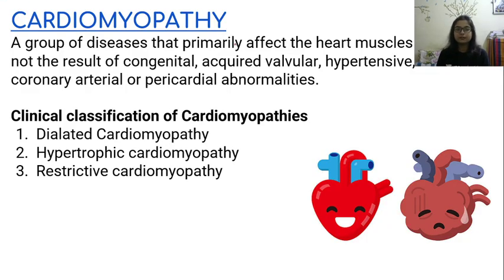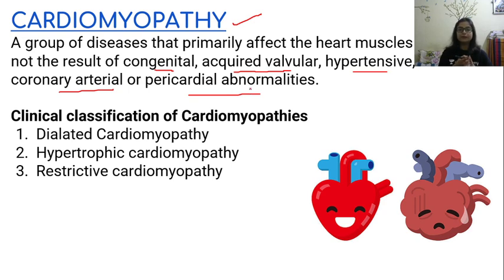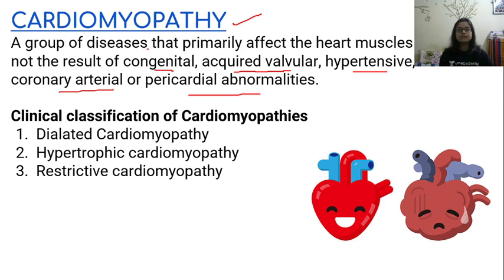What is exactly the meaning of Cardiomyopathy? It is a group of diseases that primarily affect the heart muscles and are not the result of any congenital, acquired valvular, hypertensive, coronary arterial, or pericardial abnormalities. Cardiomyopathy is a group of diseases that primarily affect the heart muscles, that is myocardium, and they do not occur as a secondary disease to some other kind of conditions. It directly affects the cardiac muscle.